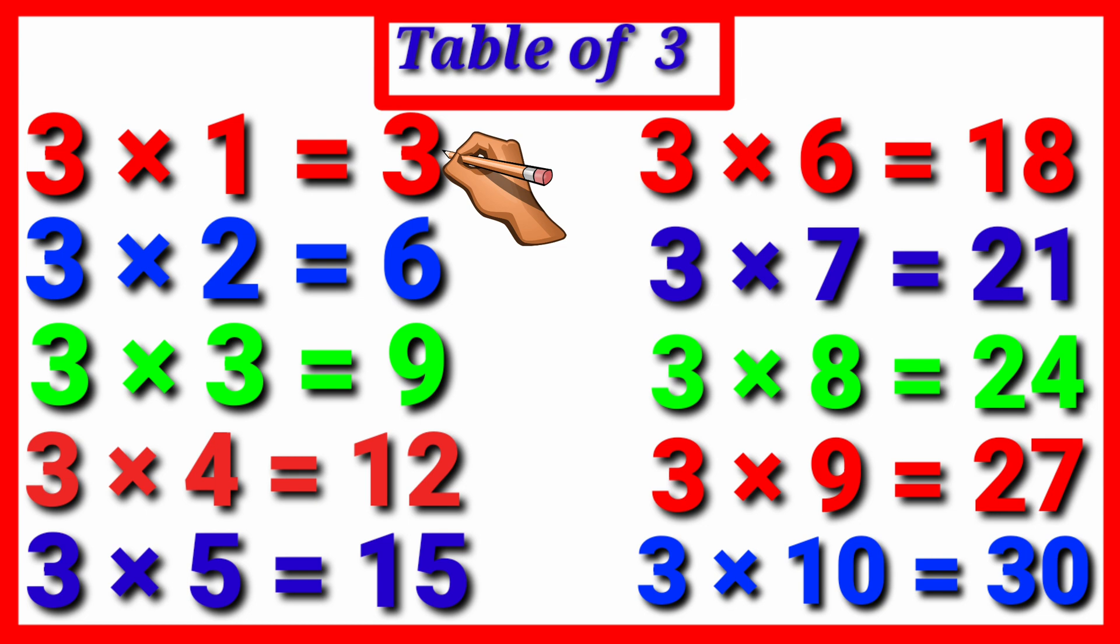Three ones are three. Three twos are six. Three threes are nine. Three fours are twelve.